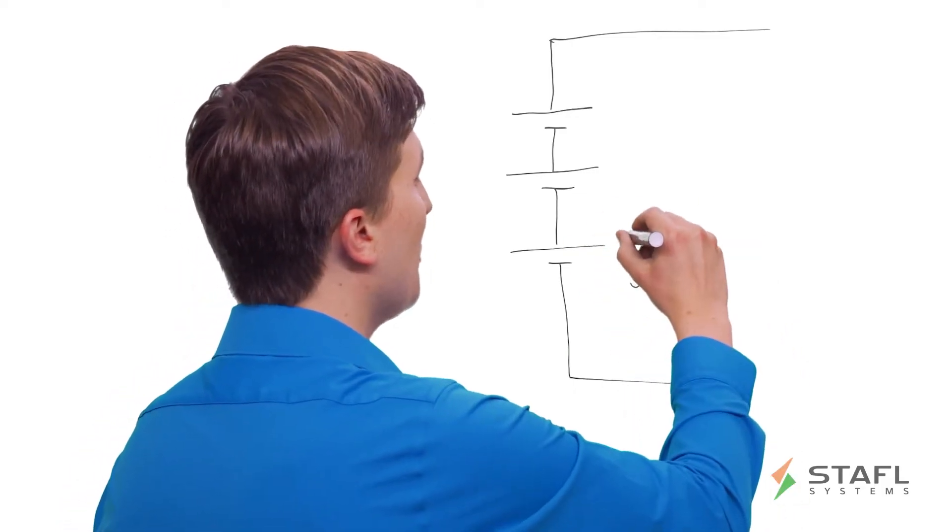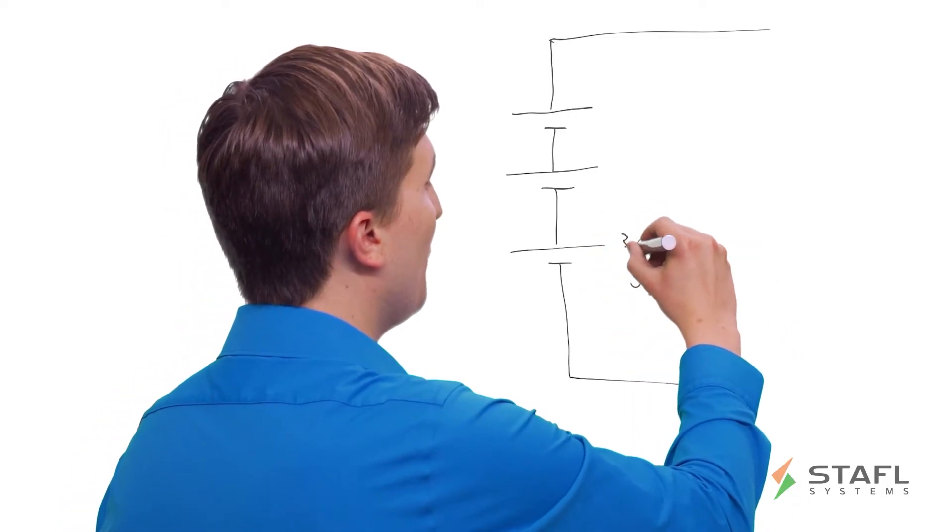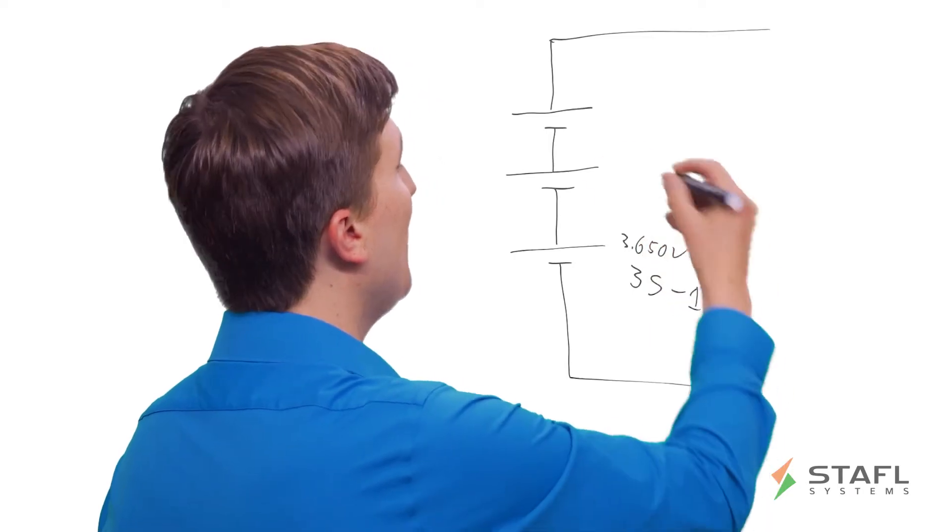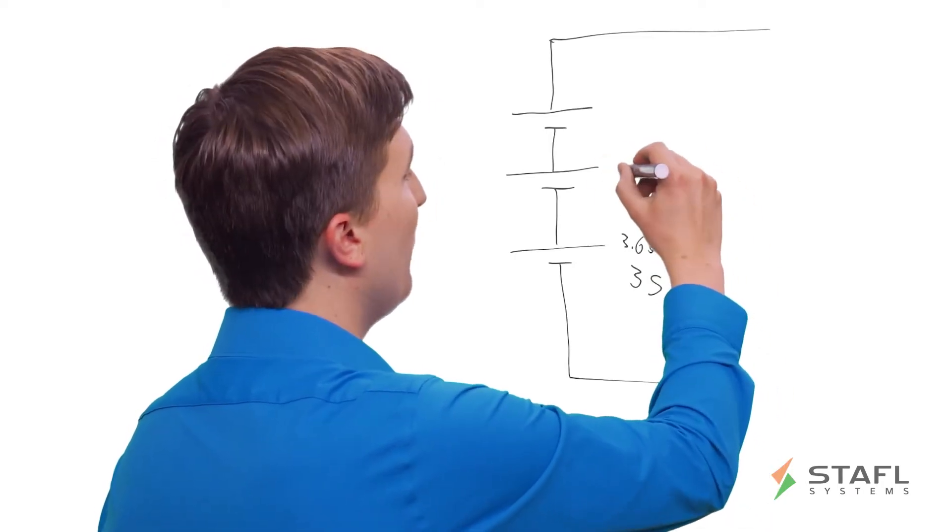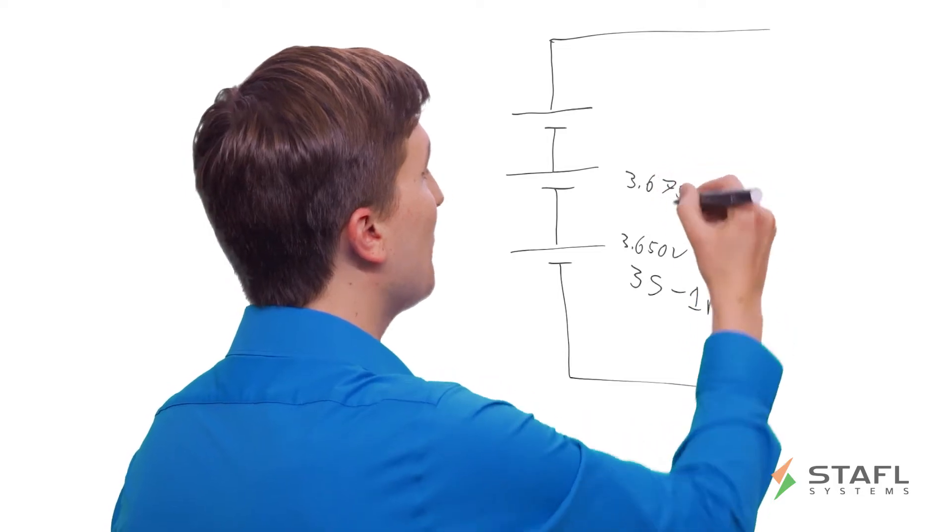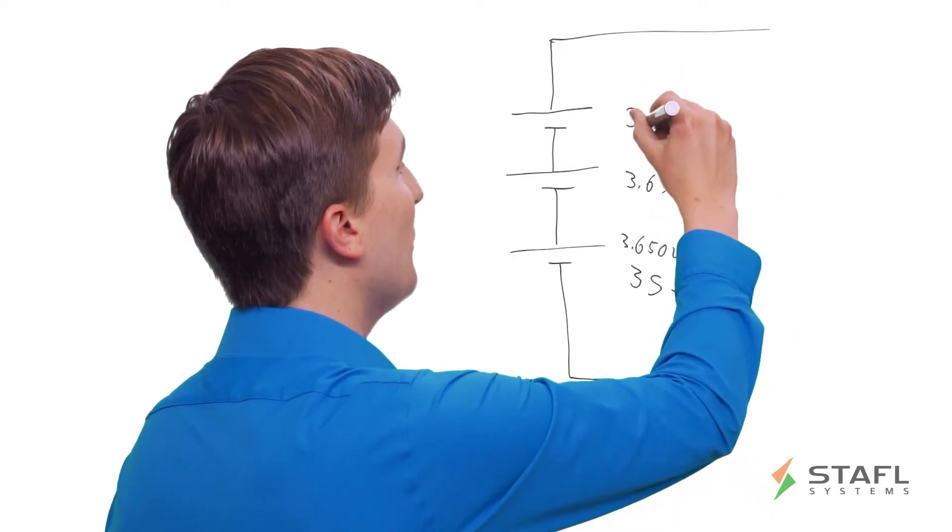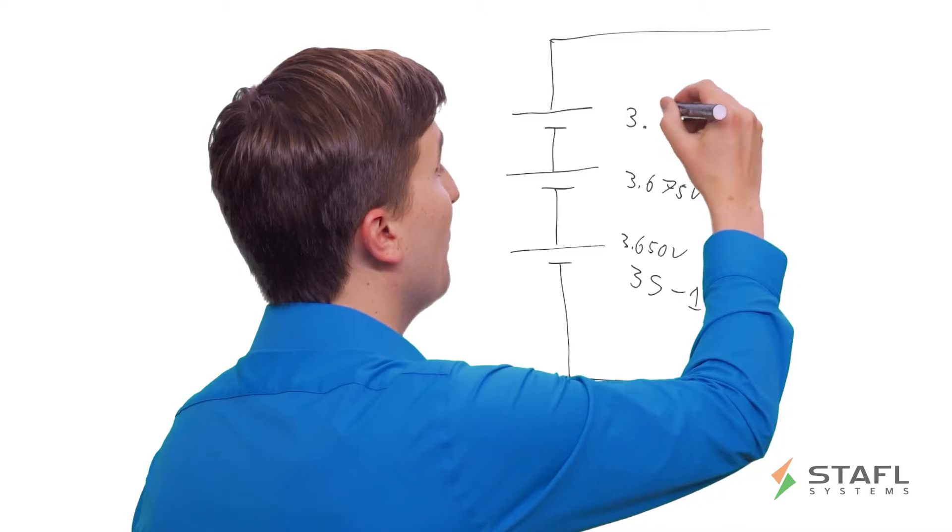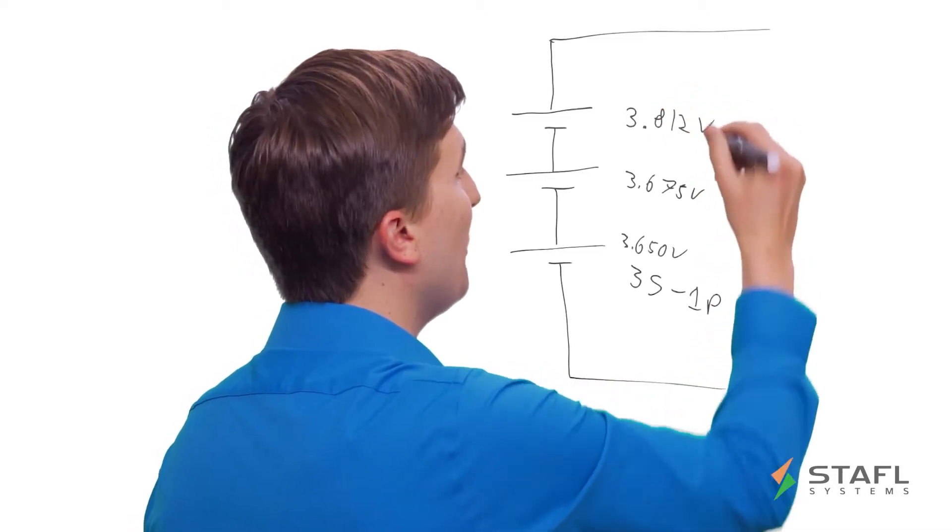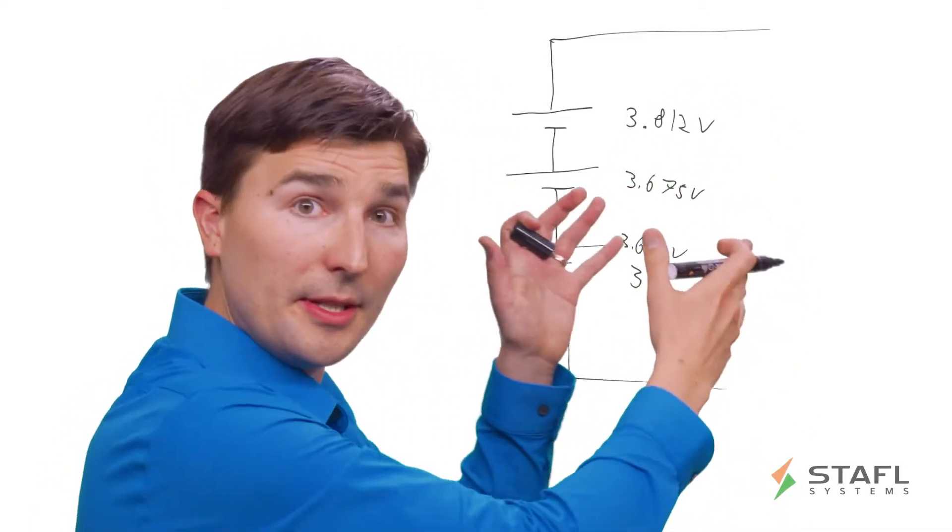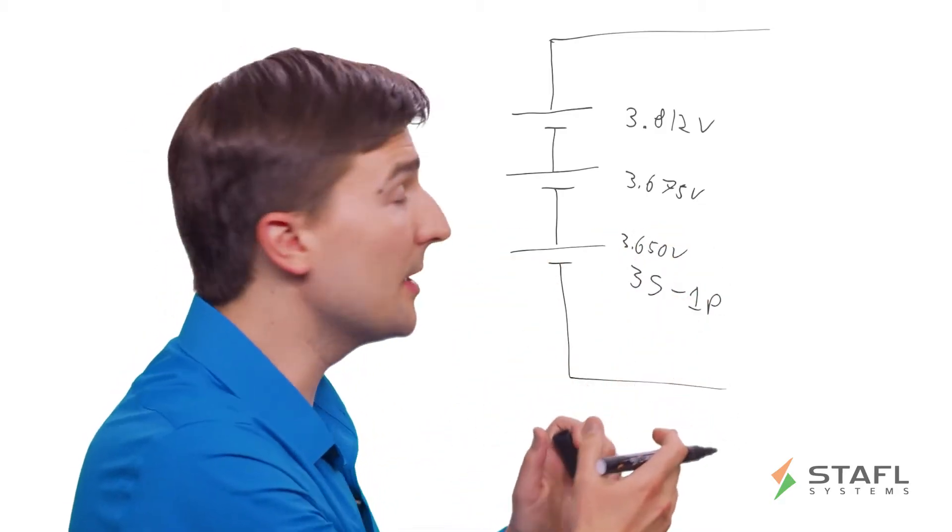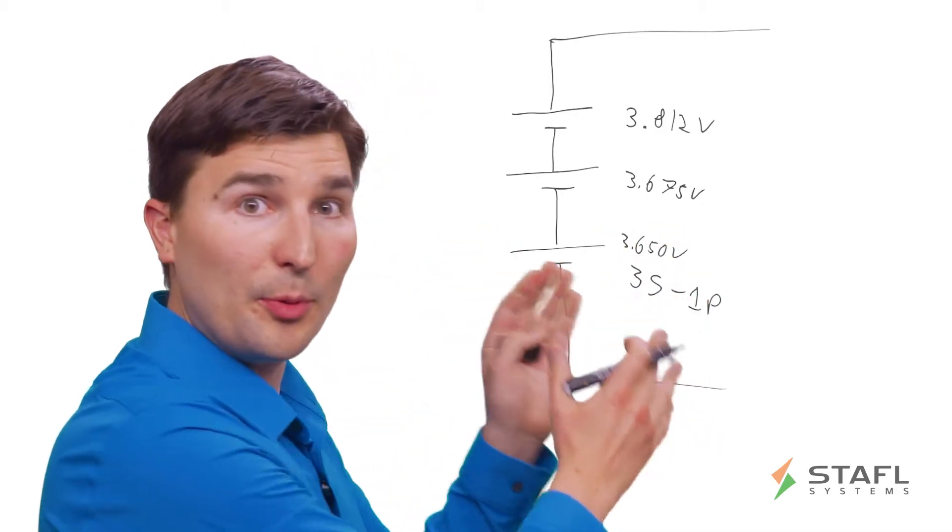So for example, this cell could be reporting a voltage of 3.650 volts, this cell could be reporting a voltage of 3.675 volts, and this cell, a little bit of an outlier, could be reporting a voltage of 3.812 volts. And the BMS is monitoring that and is able to detect that at any given time. So why is this important?